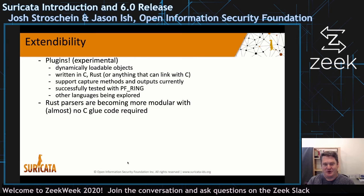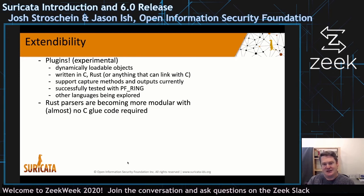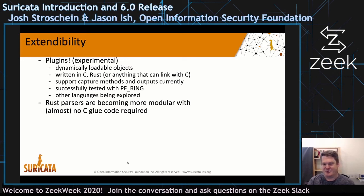Extendability is something we're working on. We did initial support for plugins — these are dynamically loadable objects written in C or Rust, basically anything that can link with C. Initial first-class support was added for capture methods and outputs, and we successfully tested with PF_Ring as a plugin. We are also working on making the Rust parsers more modular, so they're more like a Rust module you can pull in and register once.